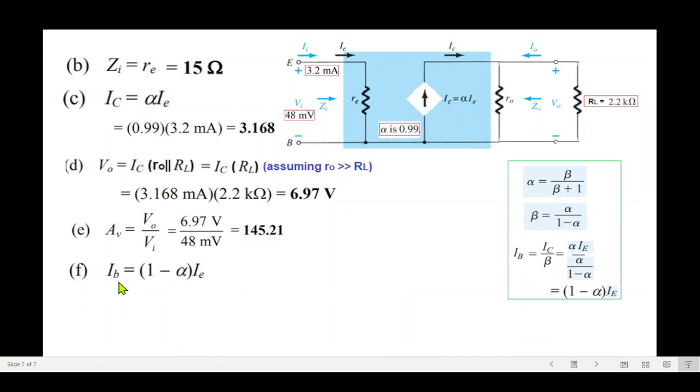Finally, base current ib. This formula is already given here, but let me explain. We know this formula that ib is ic over beta. We also know that ic is alpha times ie. Beta we don't know, not given, but alpha is given, so we can write beta in terms of alpha by using this formula. Plugging in here and then simplifying, we get this answer. Now we'll plug in the values, so the answer will be 32 microampere.